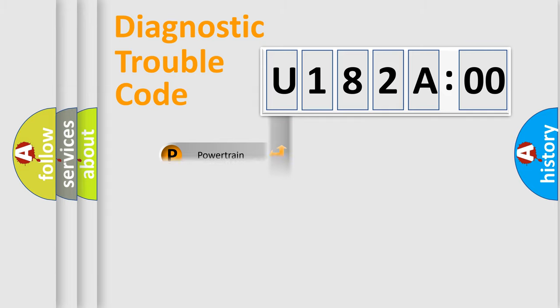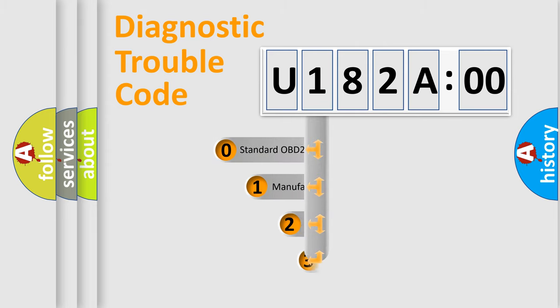Powertrain, Body, Chassis, and Network. This distribution is defined in the first character code.